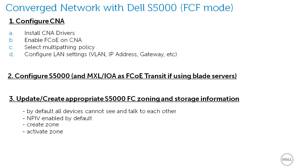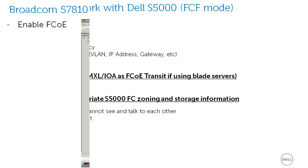Let's walk through the three steps of the deployment process: 1. Configure CNA. 2. Configure S5000. And 3. Update or create the appropriate FC zoning and storage information.